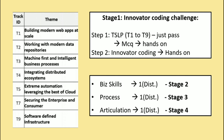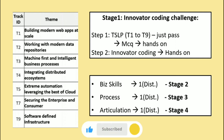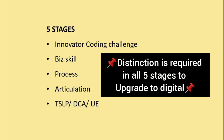One important clarification: Stage 5 consists of TSLP, DCA, or UE. However, in Stage 1, the prerequisite step is to complete TSLP by choosing a track and clearing the MCQs and hands-on. If you cleared TSLP with distinction in Stage 1, you do not need to do Stage 5. But if you did not get distinction in TSLP during Stage 1, then you must complete Stage 5 — choosing either TSLP, DCA, or UE.